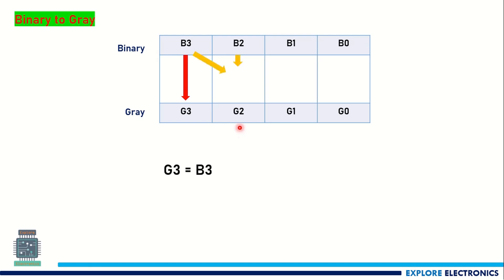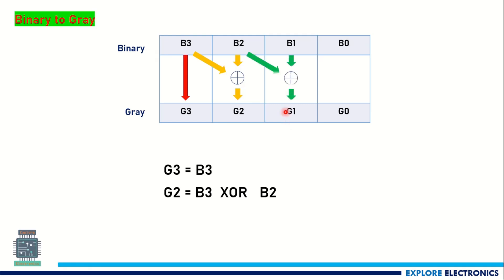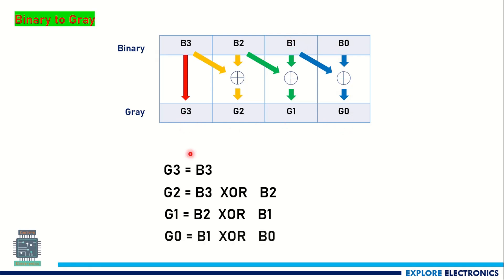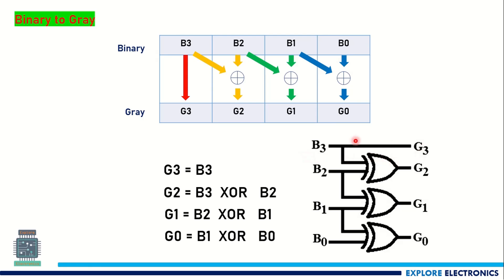To get G2, we need to take B3 and B2 into consideration and XOR those two. So G3 = B3, G2 = B3 XOR B2. To get G1, we need to XOR B2 and B1. To get G0, we need to XOR B1 and B0. These four expressions — G3, G2, G1, G0 — correspond to the MSB to LSB values of the gray code.